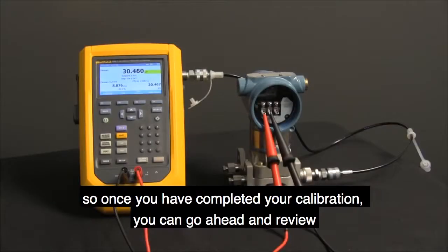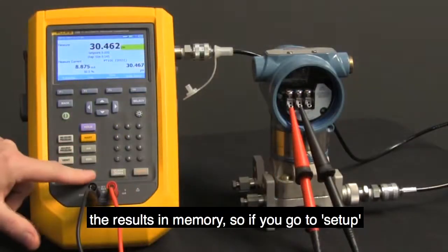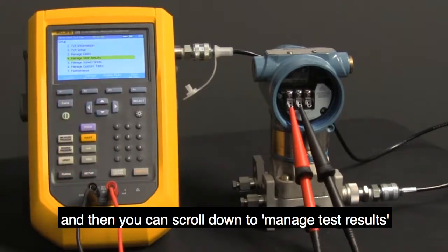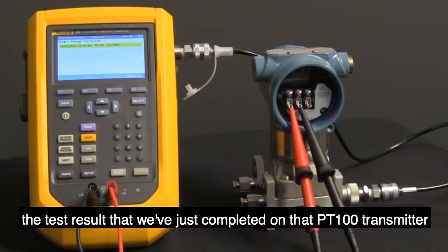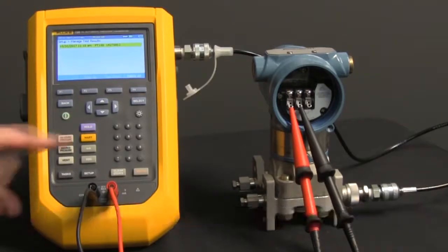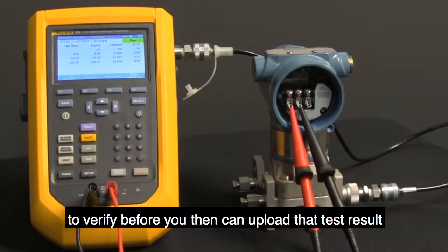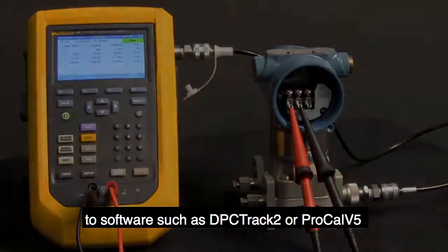So once you have completed your calibration, you can go ahead and review the results in memory. So if you go to Setup and then you can scroll down to Manage Test Results, press Enter. Now you can see the task, the test result that we've just completed on that PT100 transmitter. If you press Enter here, you can look at the actual test results to verify before you then can upload that test result to software such as DPC Track 2 or ProCal V5.